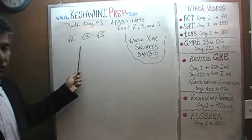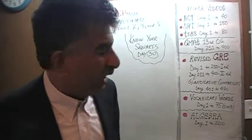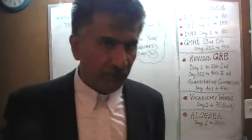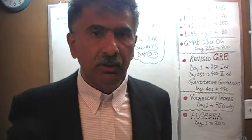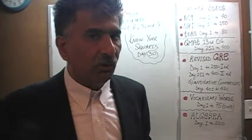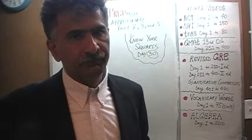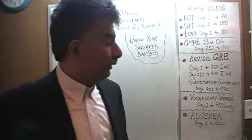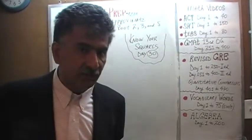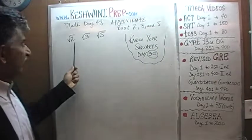Now, approximating the value of these three quantities comes directly from the knowledge that we acquired on day number 30. On day number 30, we learned our squares. When you're watching day number 48, I take it for granted that you've watched all the videos from day number 1 through 47, and have mastered all the concepts covered in those videos. If you have not watched day number 30, pause this video right now, watch day number 30, make sure you know your squares by heart, because that is what we need here to be able to approximate these quantities.